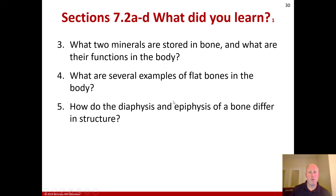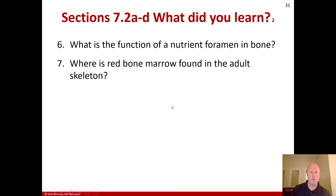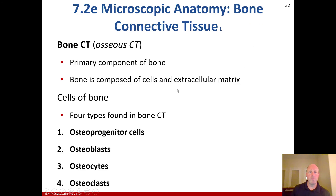Review questions: What two minerals are stored in the bone? What are their functions in the body? What are several examples of flat bones in the body? How do the diaphysis and epiphysis of a bone differ in structure? What is the function of a nutrient foramen in bone? Where is red bone marrow found in the adult skeleton? We'll come back to microscopic anatomy and bone connective tissue shortly.